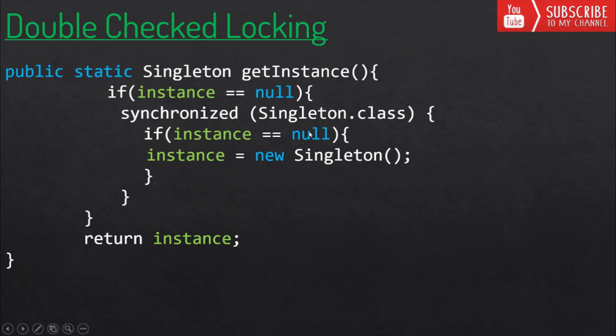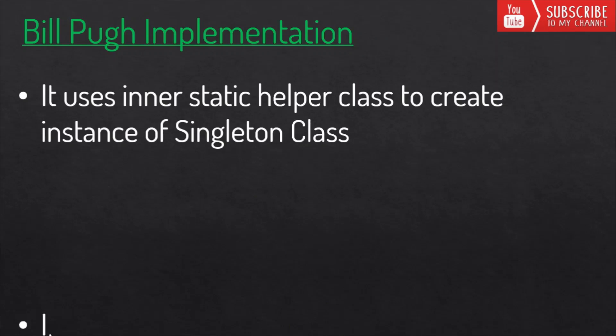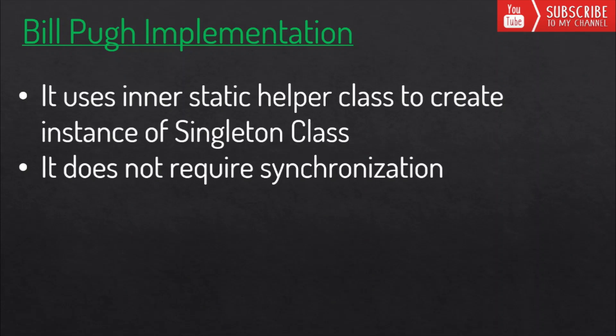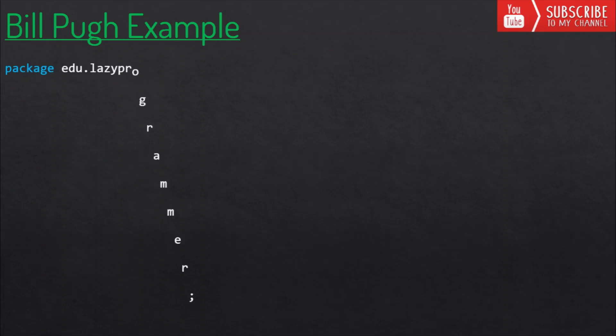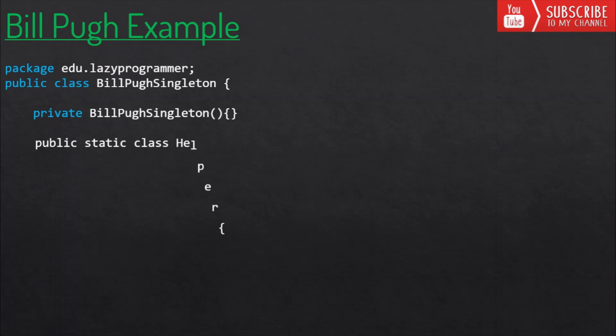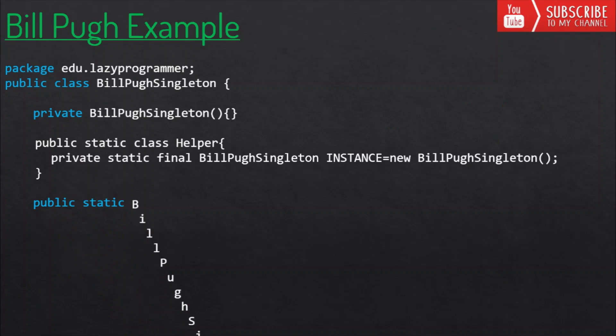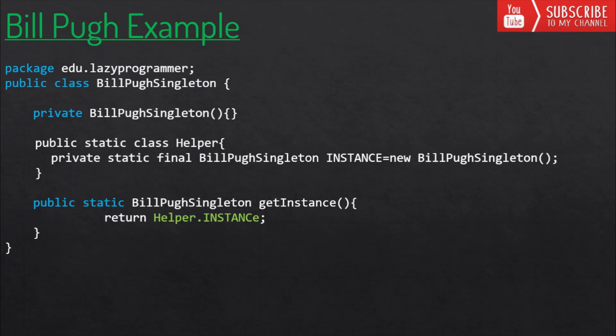Next is the Bill Pugh implementation. In this approach, a singleton class is created using a private inner static helper class. It does not require synchronization at all. When the singleton class is loaded, the helper class is not loaded into memory; only when someone calls the get instance method does the helper class get loaded and the singleton instance get created. This is the most widely used approach for singleton classes as it has no synchronization overhead.